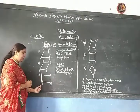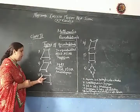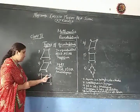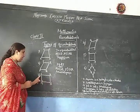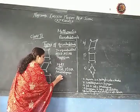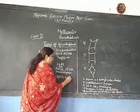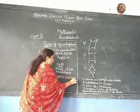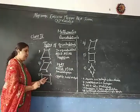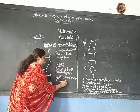Now, come to this quadrilateral MNRS. Here also, we can see that the opposite sides are equal. RS is equal to MN and MS is equal to RN. Opposite sides are equal here. This is called as the rectangle — it is a special parallelogram.